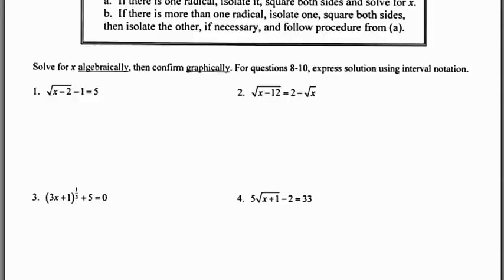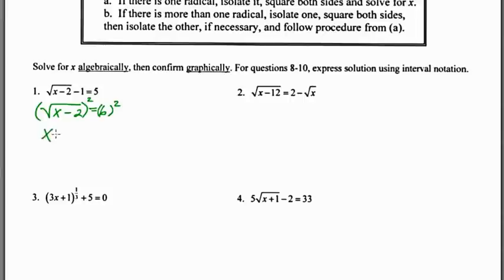In problem number one we're asked to solve the equation √(x−2) − 1 = −5. The first thing I'm going to do is add one to both sides in order to isolate the radical, leaving me with √(x−2) = 6. Squaring both sides gives x − 2 = 36, and adding two to both sides gives x = 38.